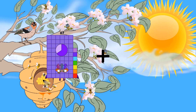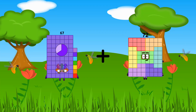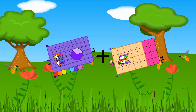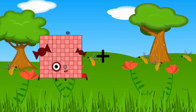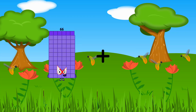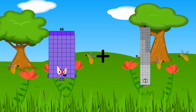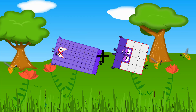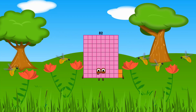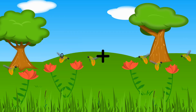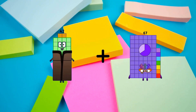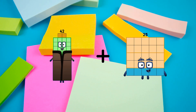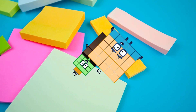67 plus 28 equals 95. 66 plus 16 equals 82. 42 plus 25 equals 67.